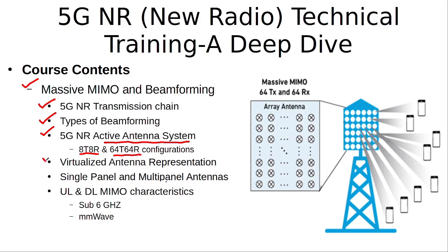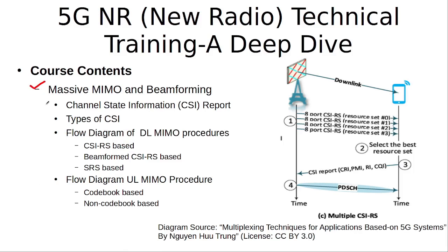Then we discuss the virtualized representation of the 5G antenna, what is the difference between single panel and multi-panel antennas, and what are the characteristics of MIMO in the uplink and the downlink in sub-6 GHz as well as millimeter wave. In the same section we discuss what channel state information report is, what are its different types, and how it is calculated. We then discuss the flow diagram for downlink MIMO procedures — which can be CSI-RS based, beamformed CSI-RS based, or SRS based — and also the uplink MIMO procedures, which can be codebook or non-codebook based.